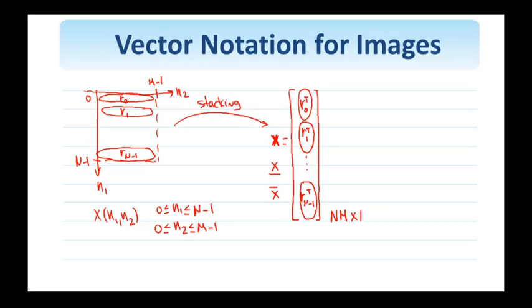And if the stacking is as shown here, I stack by rows, then it's also referred to as lexicographic ordering. So it should be clear from now on that this functional representation x(n1, n2) and this vector representation can mean the same thing in what follows.